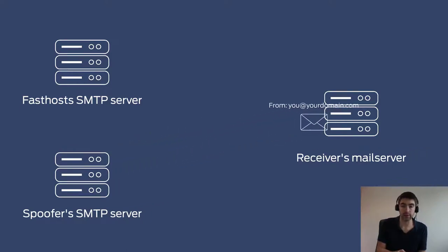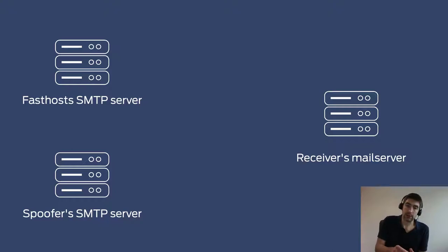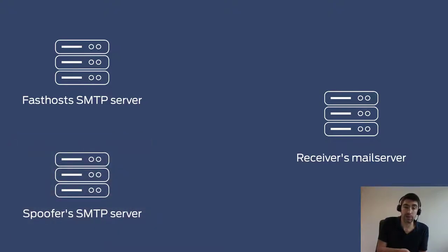An inherent problem with email is that anyone can change the FROM field in an email to whatever they want — you could pretend to be Bill Gates at microsoft.com, for example. Mail spoofing happens when someone uses a different SMTP server to send an email pretending to be you. It's important to note that they couldn't use the Fastos SMTP server in this example because they wouldn't have your mailbox password, and our SMTP server requires that you authenticate before you're able to send mail.